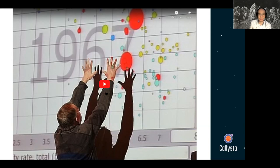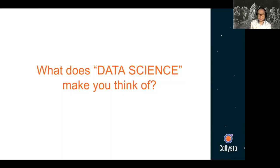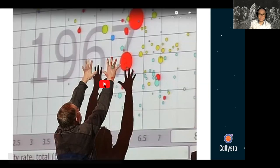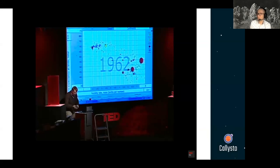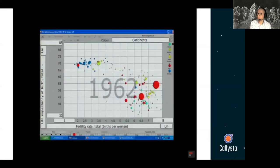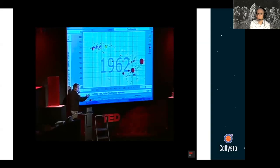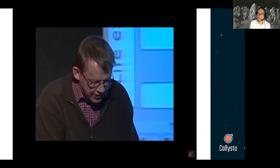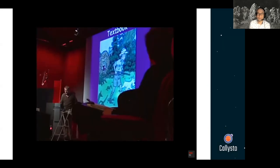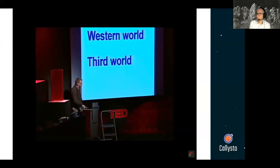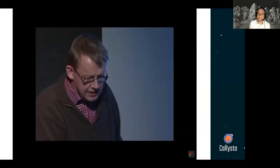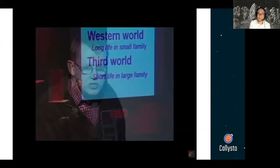So here's some of the inspiration that inspired me to learn more about data science. We did the software which displays it like this. Every bubble here is a country — this is China and this is India. The size of the bubble is the population. On this axis I put fertility rate, because my students, when they looked upon the world, said the world is still 'we and them' — we is the Western world with long life and small families, and them is the third world with short life and large families. I put fertility rate here — number of children per woman, one to about eight — and life expectancy at birth from 30 to about 70 years.